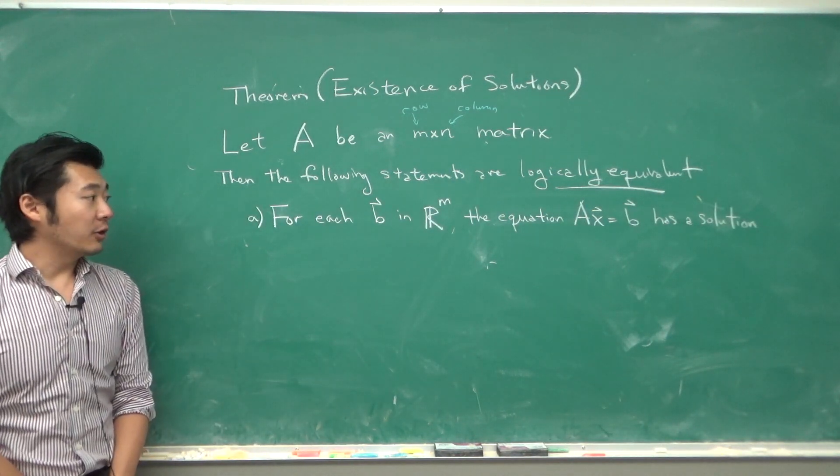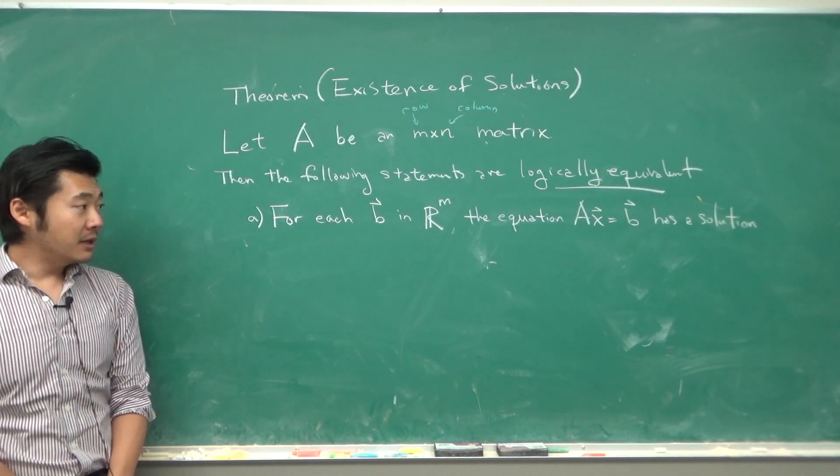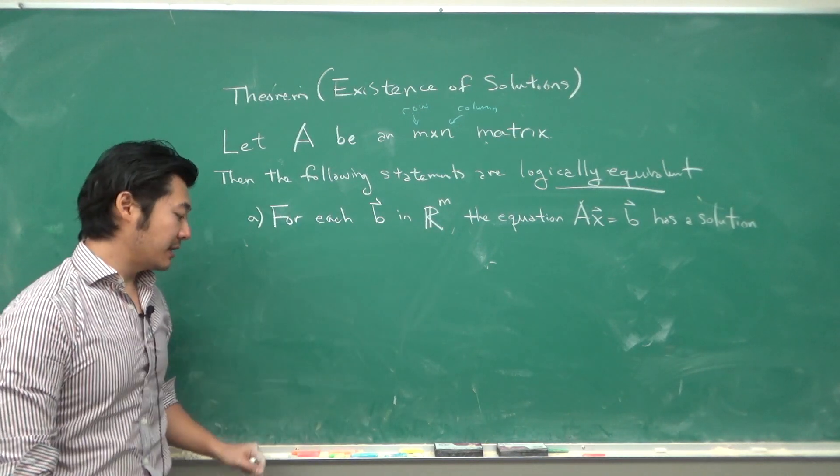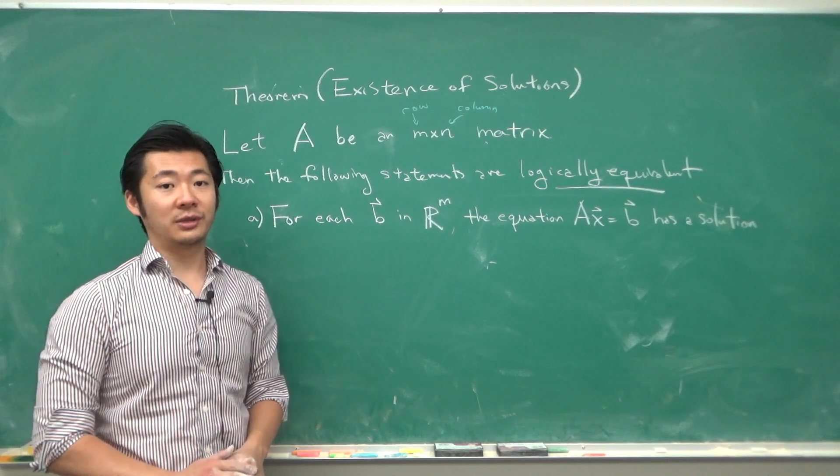Statement A: for each B in R^m, the equation Ax = B has a solution. Here R^m means m-dimensional Euclidean space.